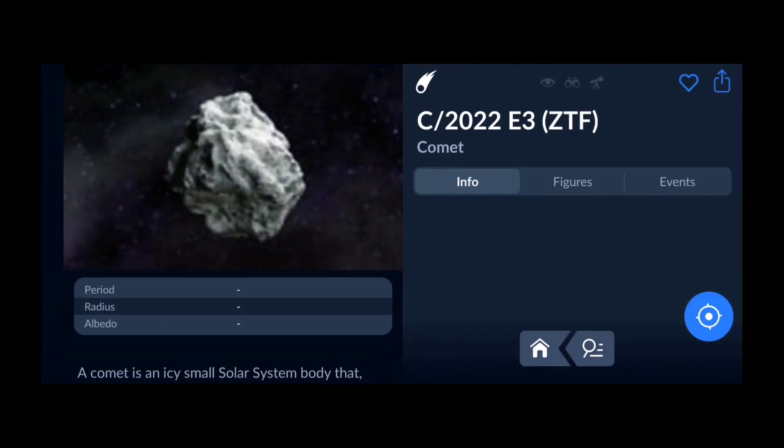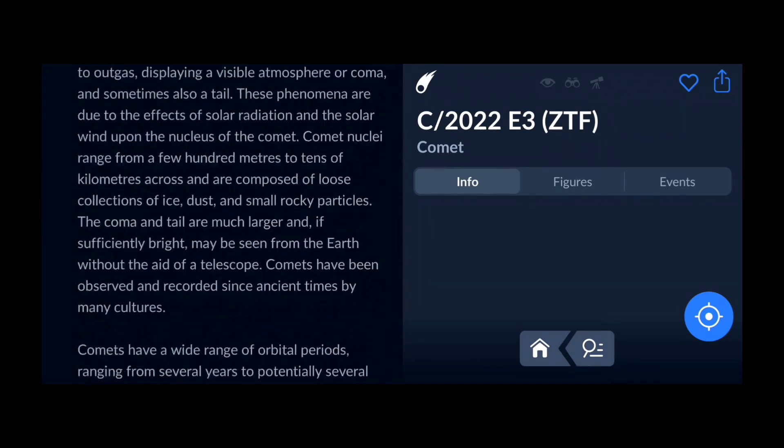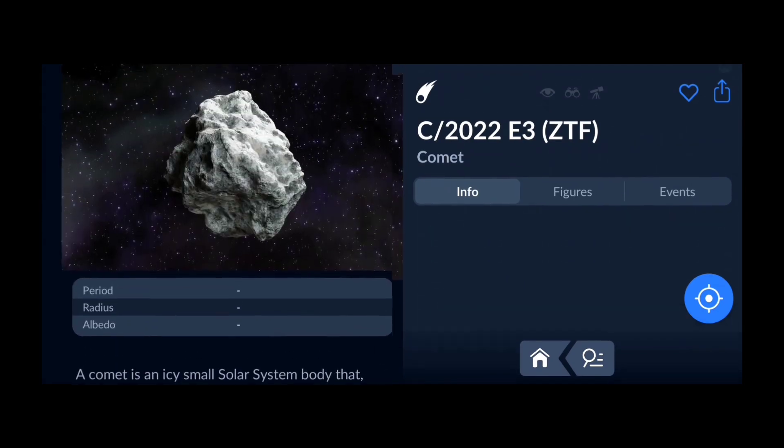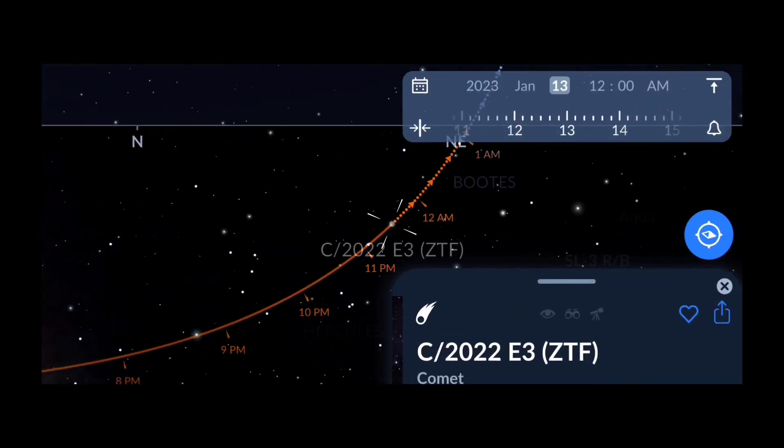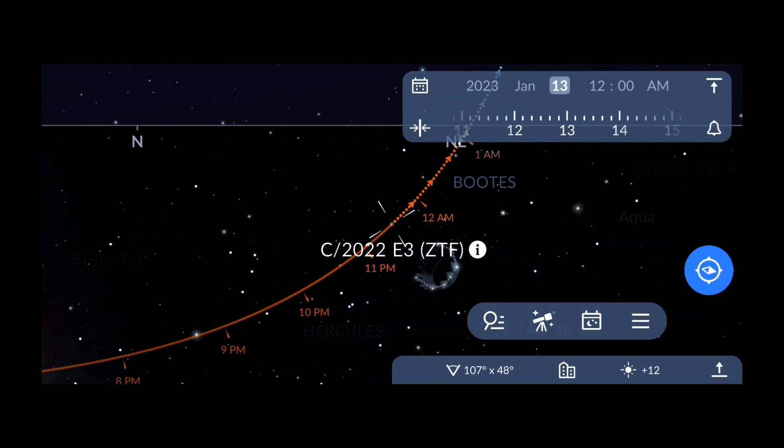After it, you have to click on the compass option seen as a blue circle in the bottom right side, and then the application will show the location of the comet on that particular day and time. You can also fast forward the time to track its path.